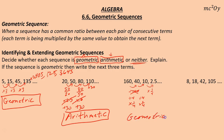The next three terms would be 2.5 times one-fourth, which in decimal form is 0.625. Then 0.625 divided by 4, or times one-fourth, is 0.15625. And then times one-fourth again gives 0.0390625. Those are the next three terms.